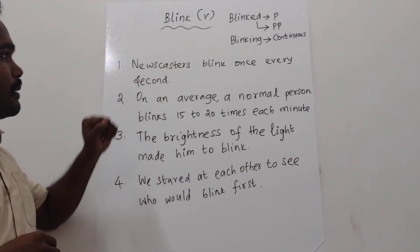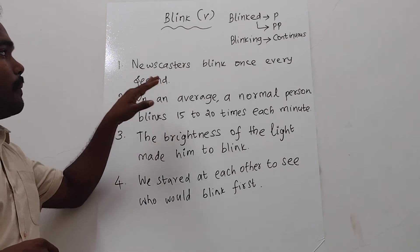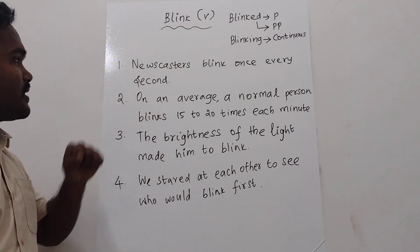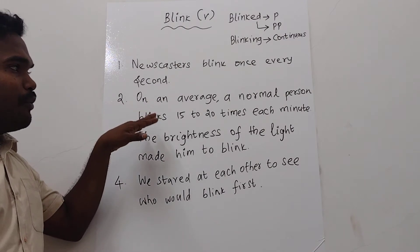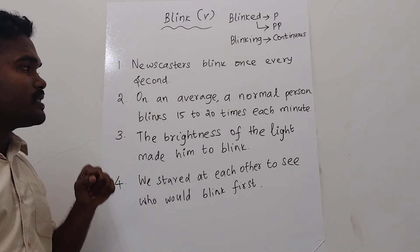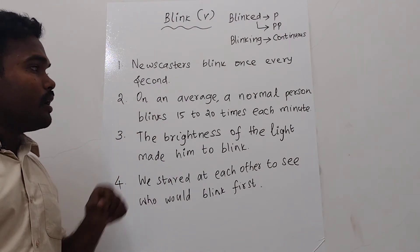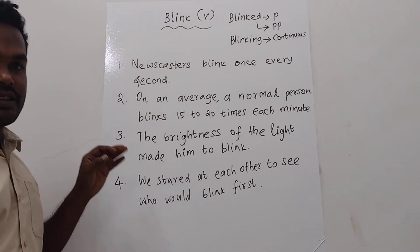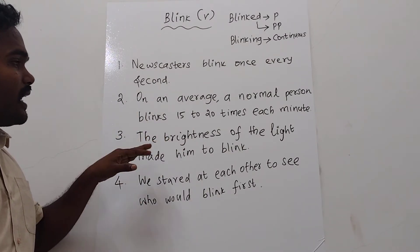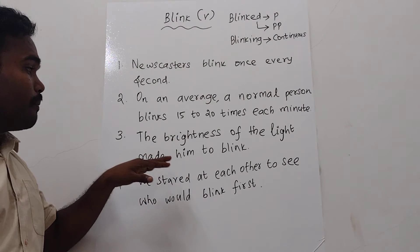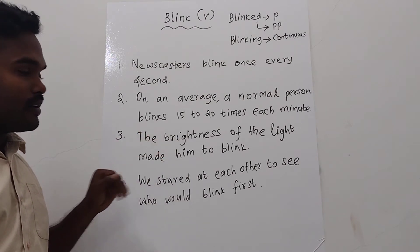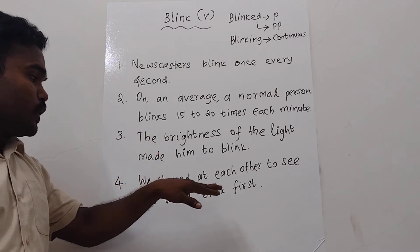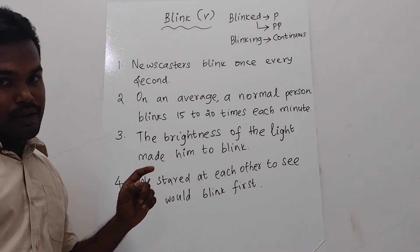The first example is: newscasters blink once every second. The second example is: on an average a normal person blinks 15 to 20 times each minute. The third sentence is: the brightness of the light made him blink. The final sentence is: we stared at each other to see who would blink first.